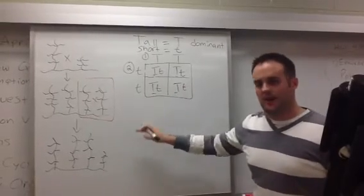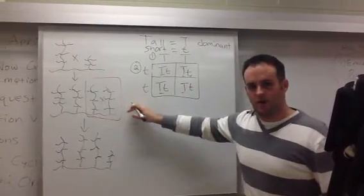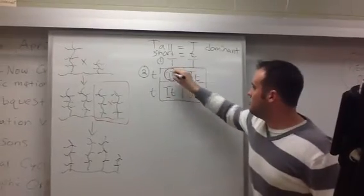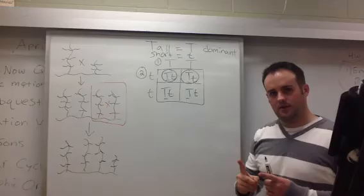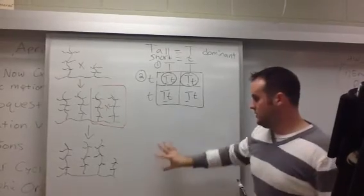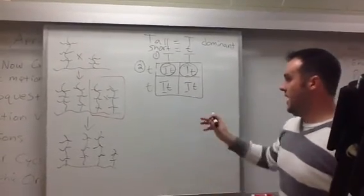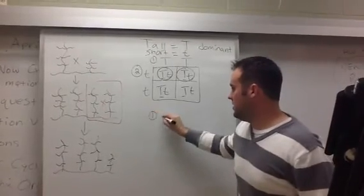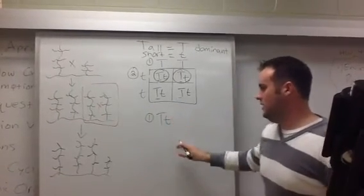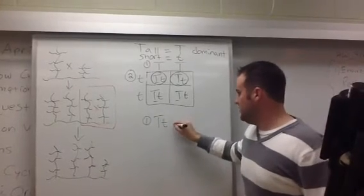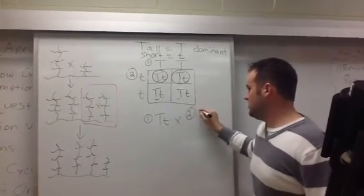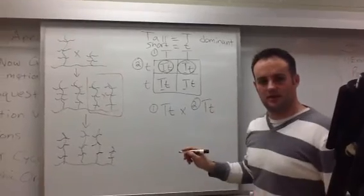So, what Gregor Mendel did in his next cross was to take two of these offspring and cross those together and see what would happen. So, we're going to put this Punnett square down here. So, the parents for this cross, the first parent is capital T, lowercase t. The second parent was also capital T, lowercase t.